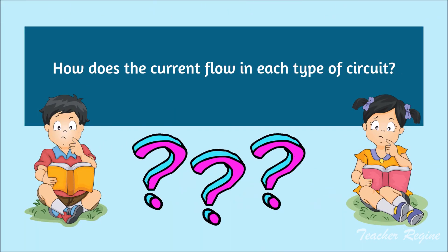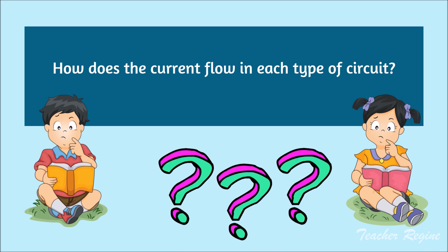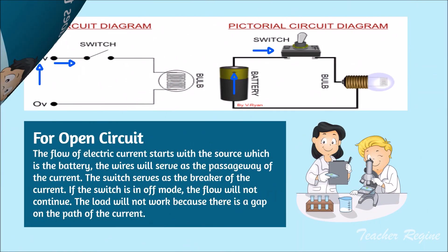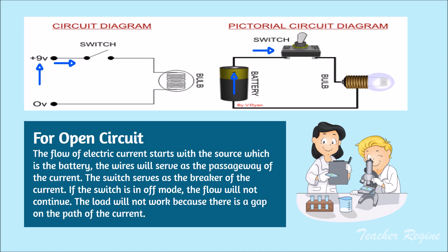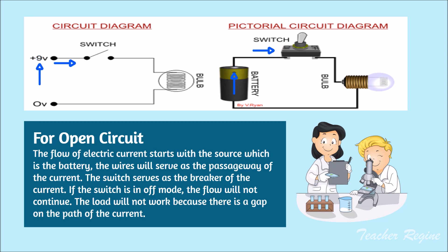How does the current flow in each type of circuit? For an open circuit, the flow of electric current starts with the source, which is the battery. The wires will serve as the passageway of the current. The switch serves as the breaker of the current. If the switch is in off mode, the flow will not continue. The load will not work because there is a gap on the path of the current.